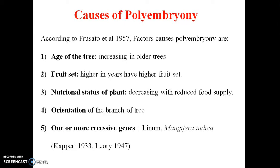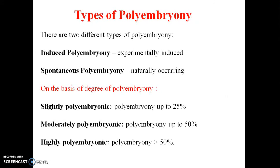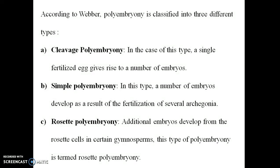Polyembryony has different types. The first is induced polyembryony and the second is spontaneous or natural polyembryony. Induced polyembryony is experimentally induced. Based on percentage, there are different levels: slight polyembryony (up to 25%), moderate polyembryony (up to 50%), and highly polyembryony (more than 50%).